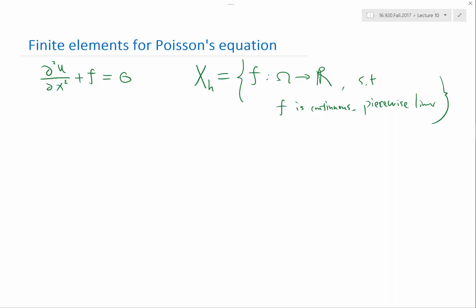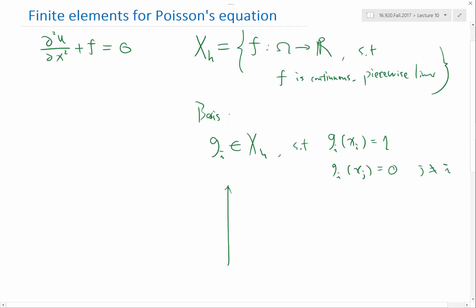We have a basis for this X_h. The basis we call G_i. G_i is in this space X such that G_i(x_i) equals 1 and G_i(x_j) for any other j equals 0. These are functions we call a nodal basis. For example, this is X, this is G_i. Let's say this is x_i, this is x_{i-1}, this is x_{i+1}. G_i would be 0 here, goes up to 1 at x_i and back to 0.